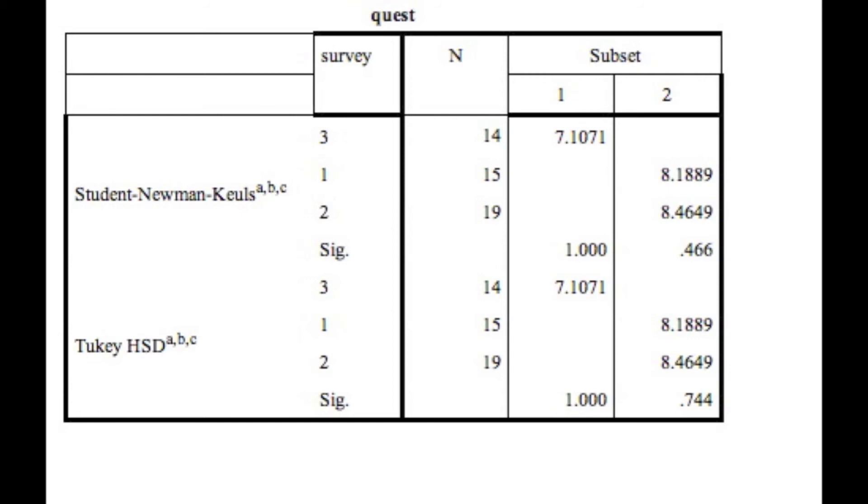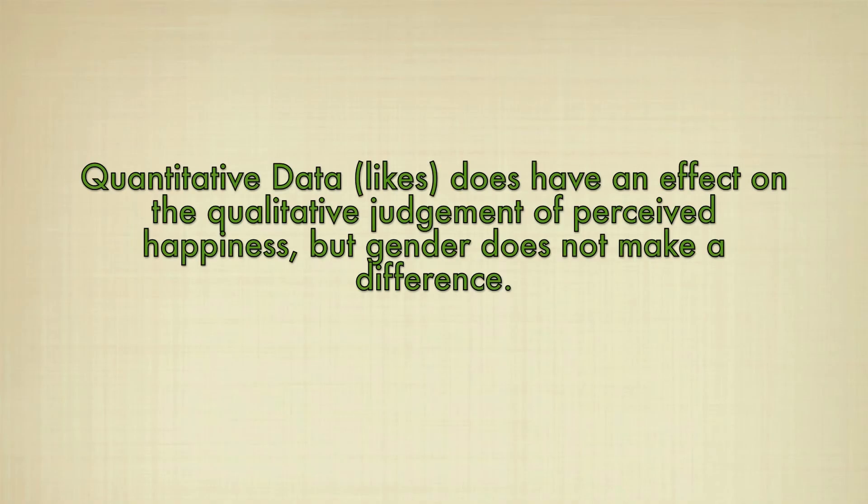Therefore, the control group, Survey 1, showed a significant between-group relationship with the survey group that had a low number of likes. Like I predicted in my hypothesis, in the environment of Facebook, quantitative data likes does have an effect on the qualitative judgment of the perceived happiness of other individuals in the pictures. Specifically, the low number of likes negatively affects the perceived happiness of the fictional Facebook user. However, gender does not influence these results. Both men and women participants are equally affected by the low number of likes.